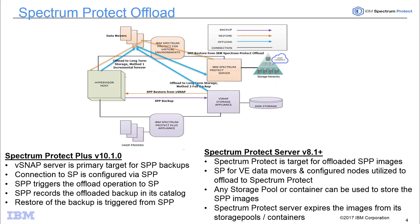Spectrum Protect Plus version 10.1 will utilize its VSNAP server as its primary target for backups. We then configure Spectrum Protect Plus to interface with Spectrum Protect, triggering the offload of its backups to the Spectrum Protect Server. Spectrum Protect Plus will record these offloaded backups in its own catalog, and when you want to restore those offloaded backups, you'll also initiate that from the Spectrum Protect Plus user interface.